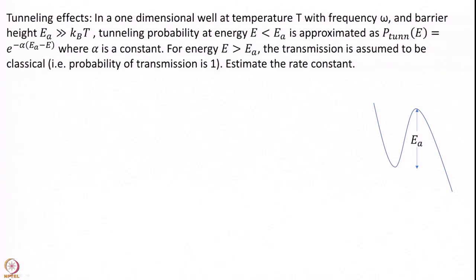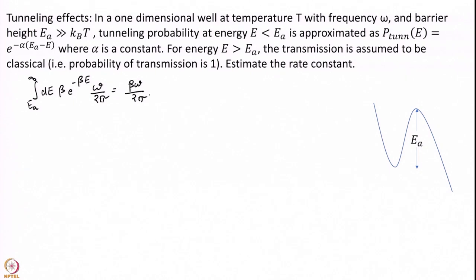Let us solve these two integrals. The second integral is easier: beta times e to the power of minus beta E times omega over 2 pi. So beta omega over 2 pi are constants, and I integrate e to the power of minus beta E from Ea to infinity. This equals omega over 2 pi times e to the power of minus beta Ea. You can quickly verify — e to the power of minus beta times infinity is 0, so we are left with only the Ea part.